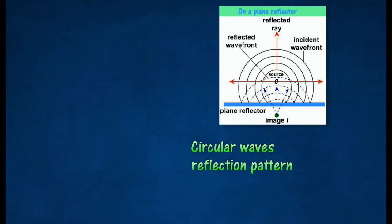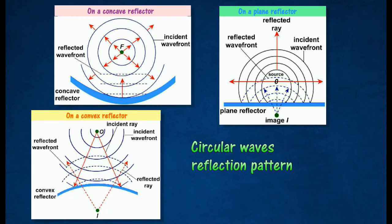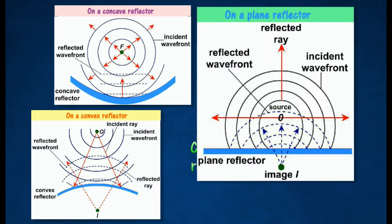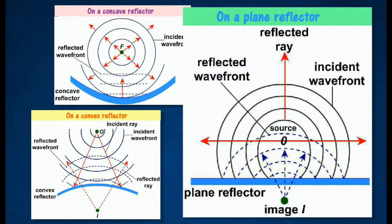Circular waves reflection pattern. Circular waves on a plane reflector: the reflected waves are spread out as circular waves, as though they originate from a point I behind the reflector.